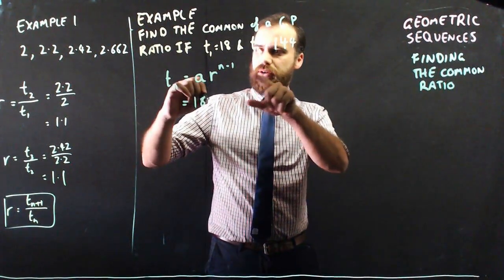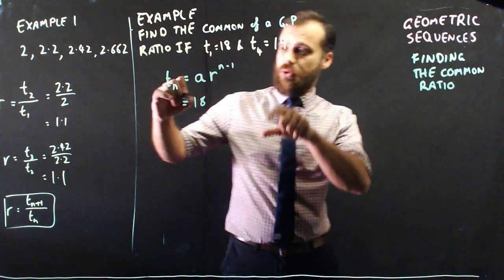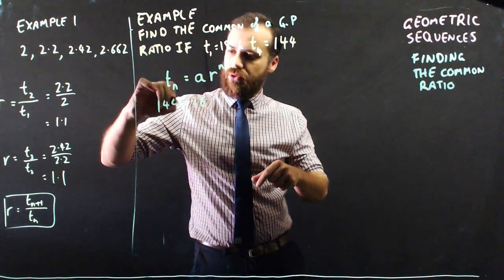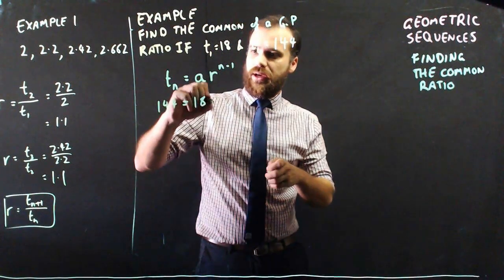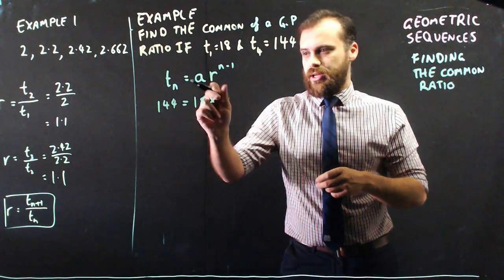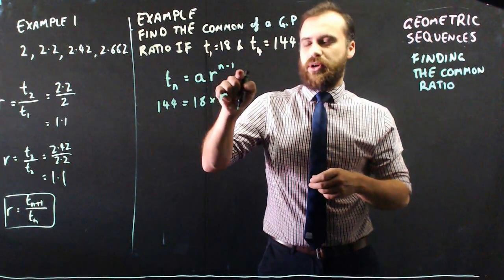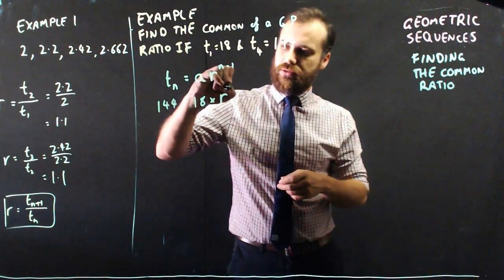And I know that term n, which is term 4, is 144. And I'm multiplying that. So to find out term 4, this is term 4, I need to multiply it by the common ratio to the power of n minus 1, 4 minus 1, which is 3.